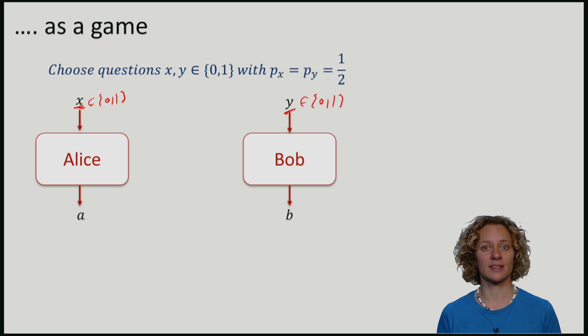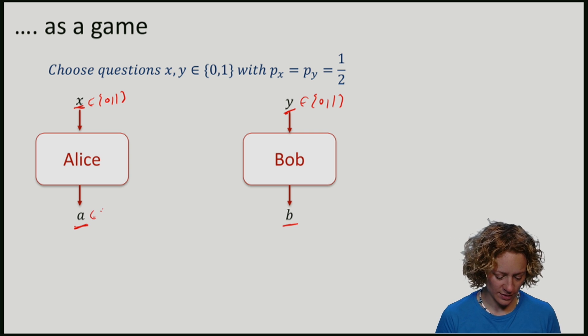Alice and Bob are going to give us some answers. We will call these answers A for Alice and B for Bob. These answers will also be just single bits here.